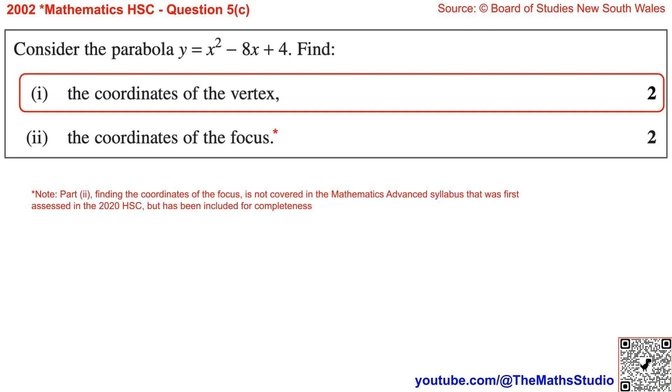Question 5, Part C. Consider the parabola y equals x squared minus 8x plus 4. Part 1: Find the coordinates of the vertex.